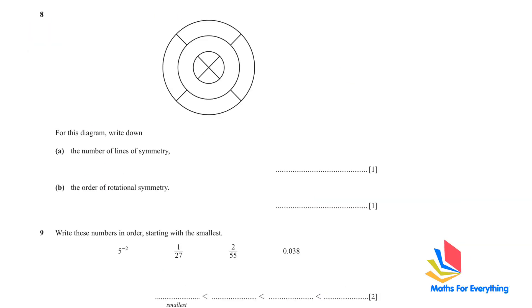Question number 8. We have been given a diagram and we have to write the number of lines of symmetry. You can see that it has been divided into four equal parts. So the number of lines of symmetry is 4. And the order of rotational symmetry will be also 4.